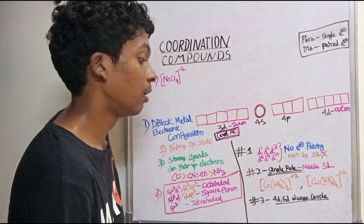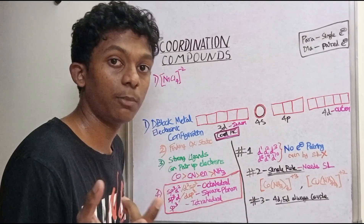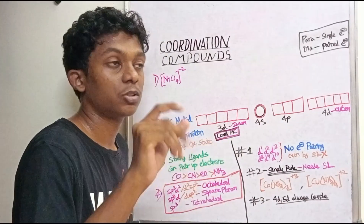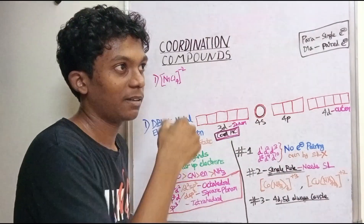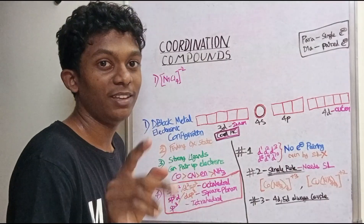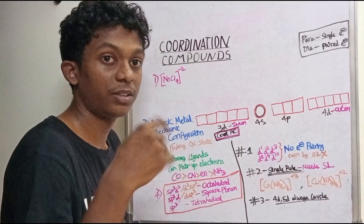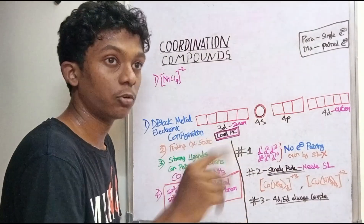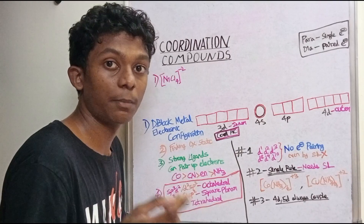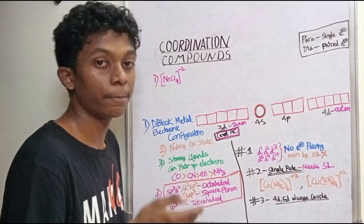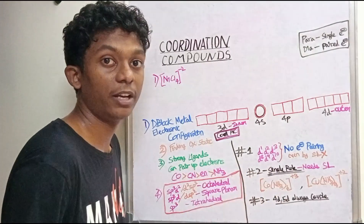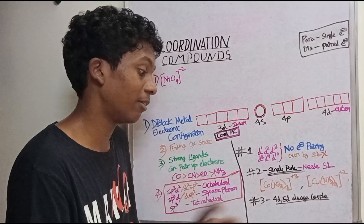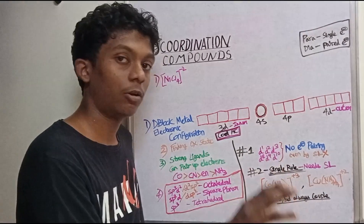The third special trick is for 4D and 5D series metals. In the 3D series, you apply the normal rules. But for 4D and 5D metals — for example, Platinum, which is a 5D metal — the electrons are always paired, whether the ligand is strong or weak. 4D and 5D metals always have paired electrons.